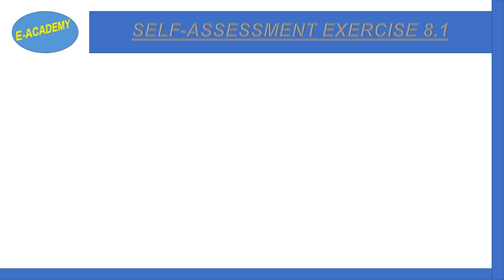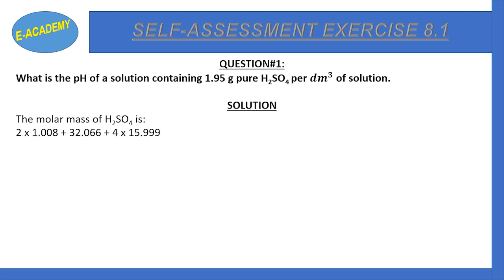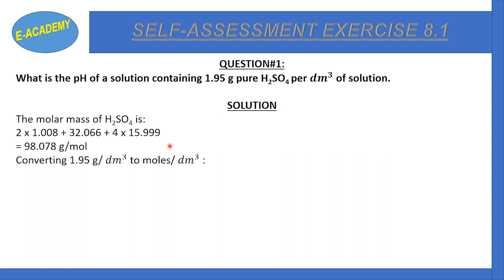Self-assessment exercise 8.1, question number one: What is the pH of a solution containing 1.95 grams of pure H₂SO₄ per dm³ of solution? The molar mass of H₂SO₄ is calculated as 2×1.008 plus 32.066 plus 4×15.999, giving us a molar mass of 98.078 g/mol.